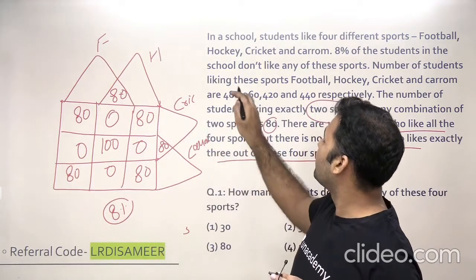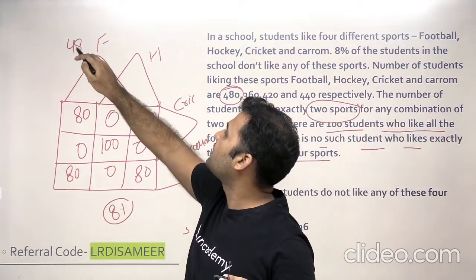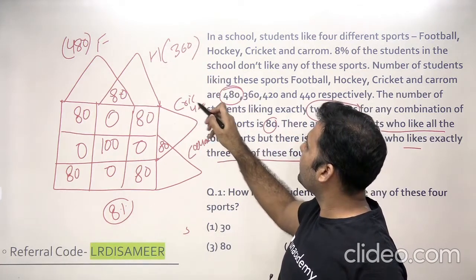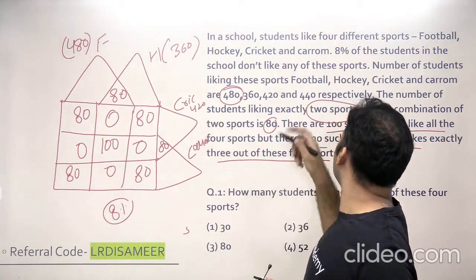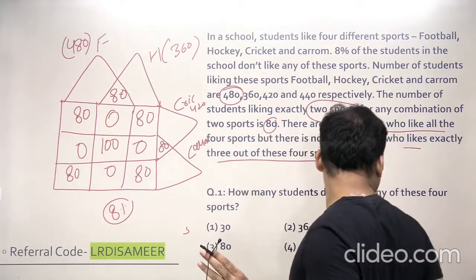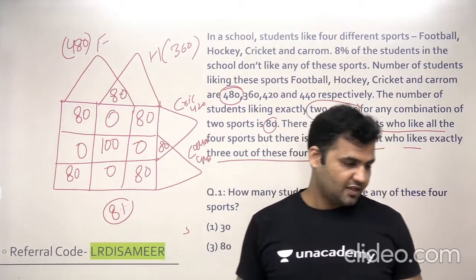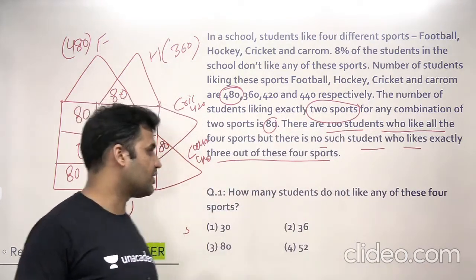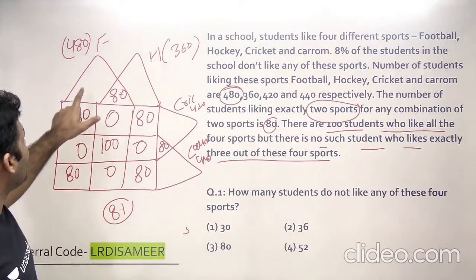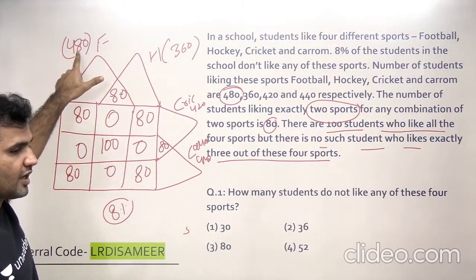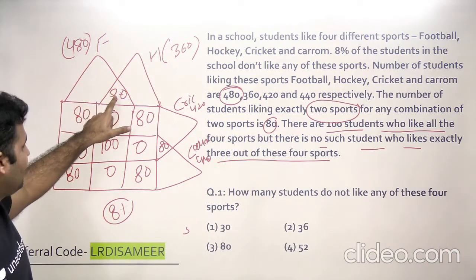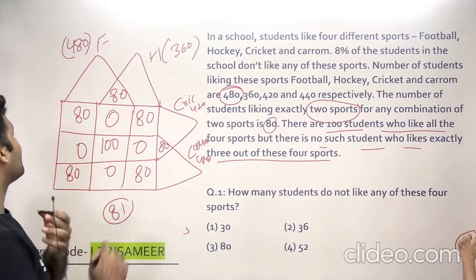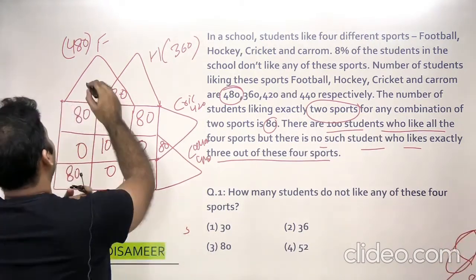The total number of students liking football is 480, hockey is 360, cricket is 420, and carom is 440. Let's find the only-football value. The total for football is 480. Subtracting the three intersection-of-two values (80 + 80 + 80 = 240) plus the center value of 100 gives 340. So the remaining value — only football — is 140.